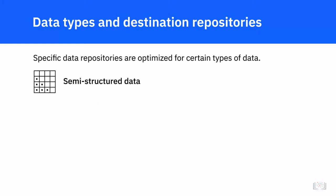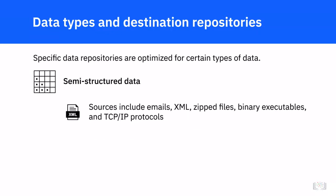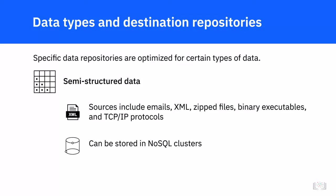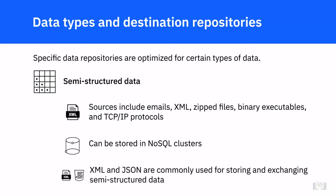Semi-structured data is data that has some organizational properties but not a rigid schema, such as data from emails, XML, zipped files, binary executables, and TCP/IP protocols. Semi-structured data can be stored in NoSQL clusters. XML and JSON are commonly used for storing and exchanging semi-structured data. JSON is also the preferred data type for web services.